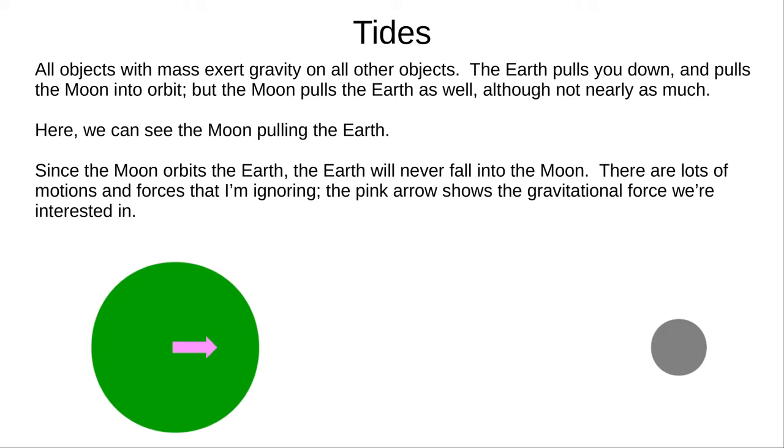This diagram shows the Earth and the Moon. All objects with mass exert gravitational attraction on all other objects in the universe, meaning that the Moon pulls the Earth, although quite weakly as its mass is fairly low compared with the Earth's mass.